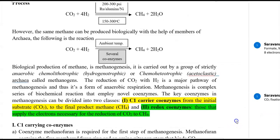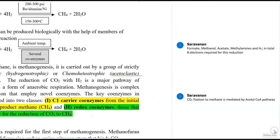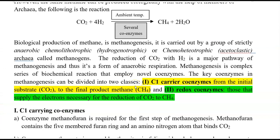The carbon source can come from different sources: it can be carbon dioxide, or it can come from other sources such as formate, methanol, acetate, and methylamine. These compounds supply carbon for conversion to methane. For the total process of this conversion, eight electrons are required for the reduction of carbon into methane. Biological production of methane is referred to as the methanogenesis process.